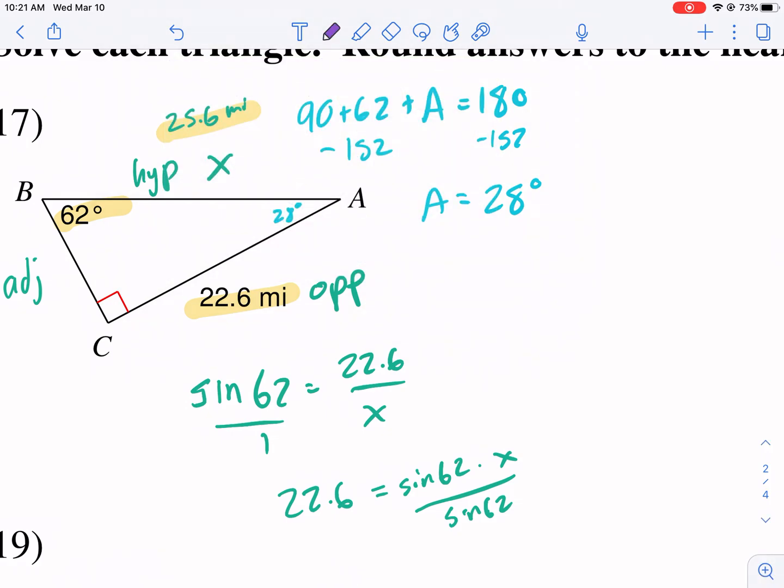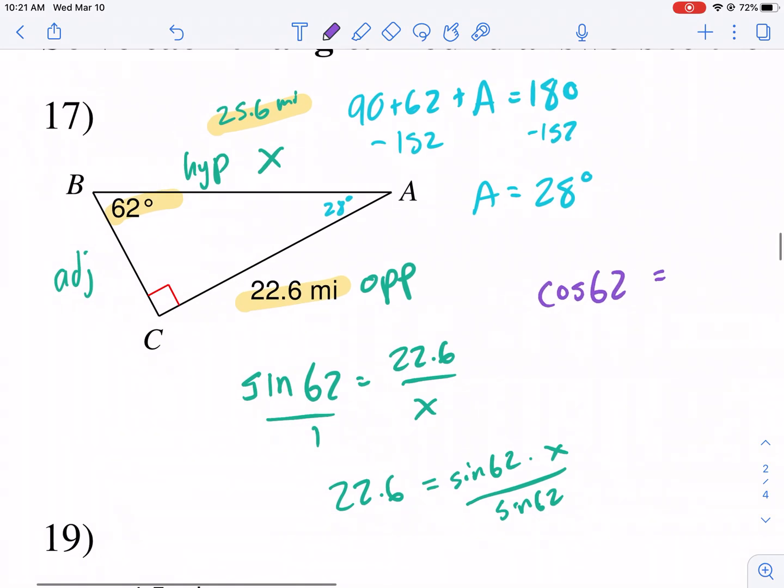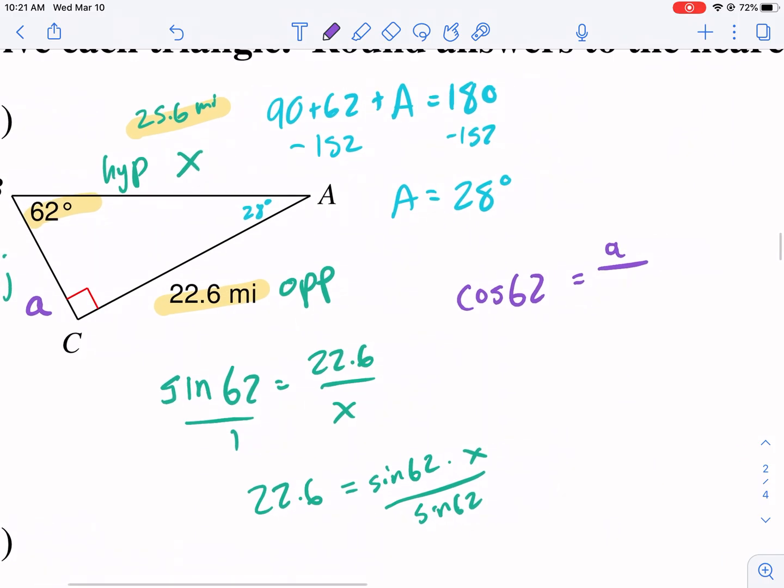I'm going to divide by sine 62. So I get 22.6 divided by sine 62. And I get 25.6 miles. So this is 25.6. Once you have two sides, you can actually use Pythagorean theorem for the third side, or you can just keep using more trig. I'm going to use cosine this time and I'm going to keep 62 as my reference angle. So I'm going to say cosine of 62 is equal to my adjacent side A over my hypotenuse. Now I know it's 25.6.